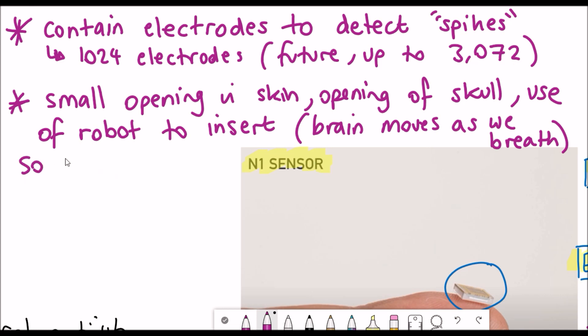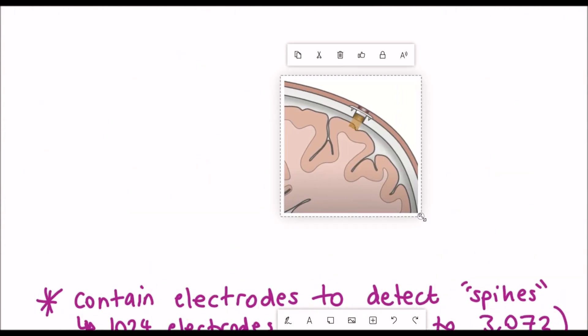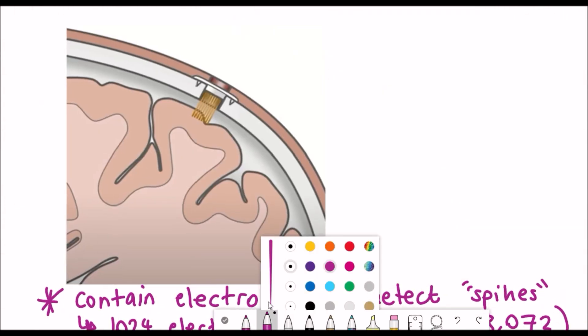The idea is to use a robotic system to have a quick placement of the threads into the cortex and this is important because the brain naturally moves as we breathe and only a robot would be able to get that precision and able to avoid vasculature in the brain.